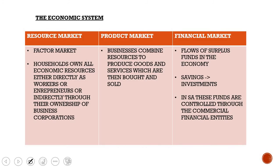Now we're looking at the economic system. In the economic system you have three different types of markets: your resource market, product market, and your financial market. The resource market is your factor market, where households own all economic resources — either directly as workers or entrepreneurs, or indirectly through the ownership of business corporations. This is where your factors of production are sold.